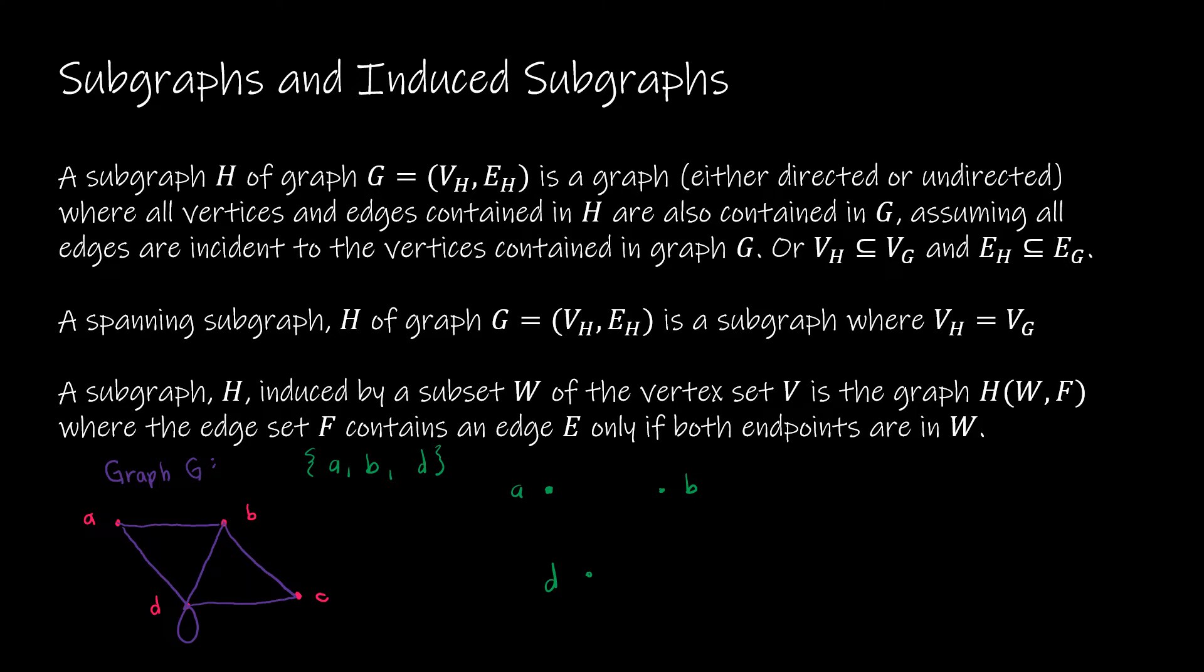Which means I'm going to get rid of any edges connected to C. So I'm going to get rid of that edge, and that edge, and that vertex, because C is not part of the subset. So that graph is going to look like this. This would be the subgraph induced by the subset W, including A, B, and D.